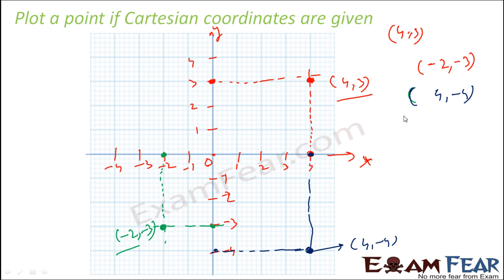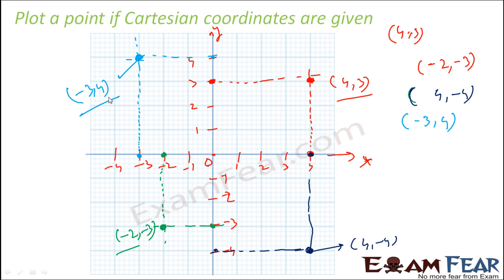Let's take one more example for the second quadrant: minus 3 comma 4. Along x, minus 3 is this point; along y, 4 is this point. Drawing the perpendicular lines, they meet at minus 3 comma 4. So to plot any point, find its x value on the x-axis and its y value on the y-axis, draw perpendiculars, and where they meet is your point.